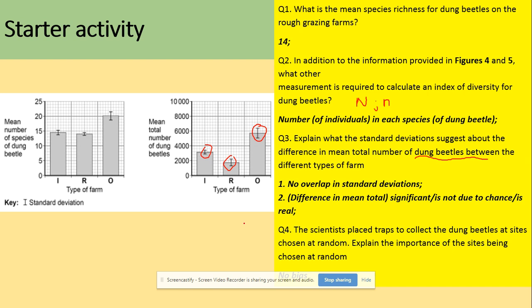And the scientists would like to place traps to collect the species here at random and explain the importance of doing that at random - so not bias. So that's another typical question.